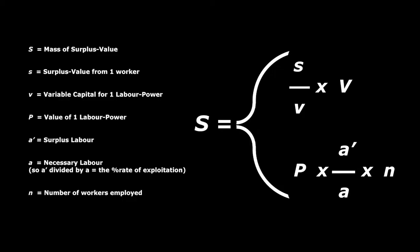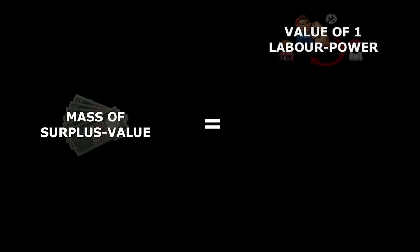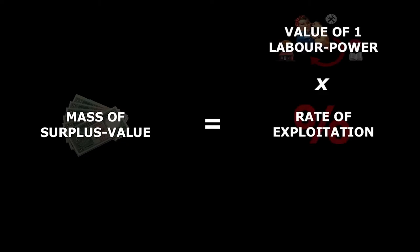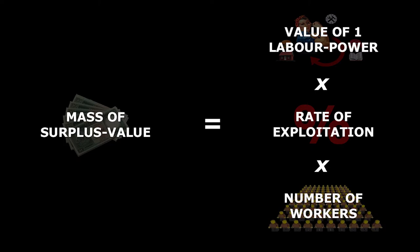Marx expresses this in a formula. In simple terms, we can say that the mass of surplus value can be calculated by the value of one labour power, multiplied by the rate of exploitation, multiplied by the amount of labourers employed. From this, Marx now defines some laws that are observable.